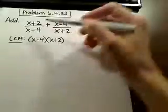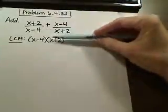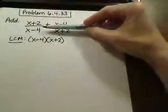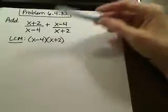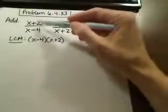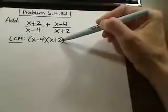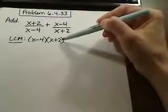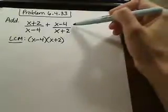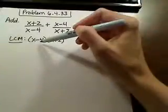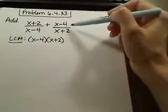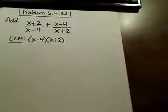So we're going to compare, we're going to take a look at what we have and compare it to where we need to go, and whatever's missing is what we're going to multiply by. So this first fraction here in the denominator, it's missing the x plus 2, so we're going to multiply the top and the bottom by the x plus 2, and the second fraction is missing the x minus 4, so we're going to multiply the top and the bottom by the x minus 4.